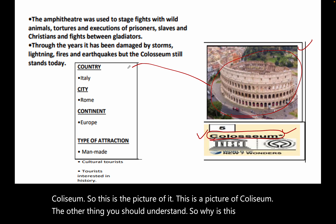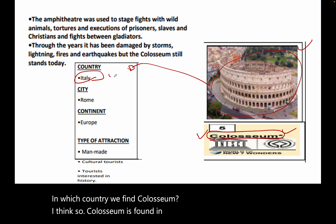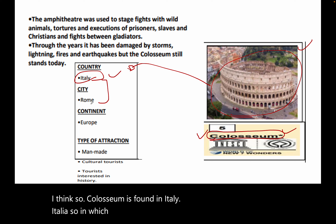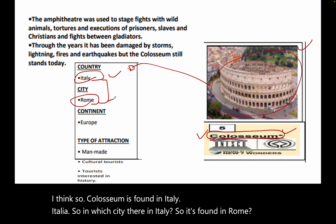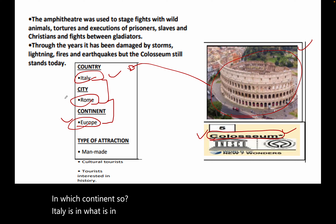Where is the Colosseum? In which country do we find it? The Colosseum is found in Italy. And in which city in Italy? It's found in Rome. In which continent? Italy is in Europe.